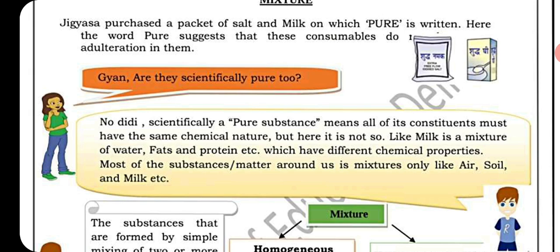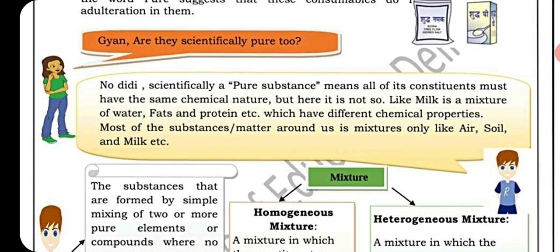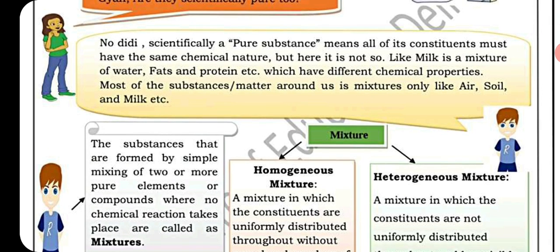Pure substances are made up of only one kind of matter. For example, copper is made up of only copper particles. Substances like milk, on the other hand, are mixtures because they are made up of two or more different types of substances combined together.